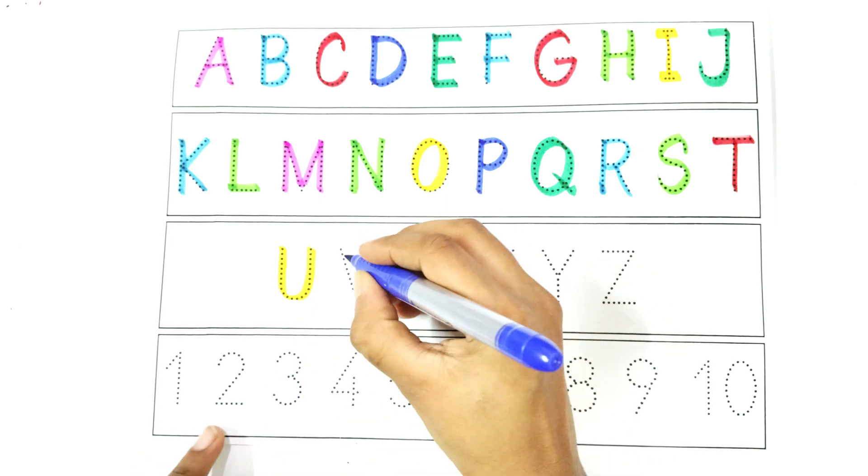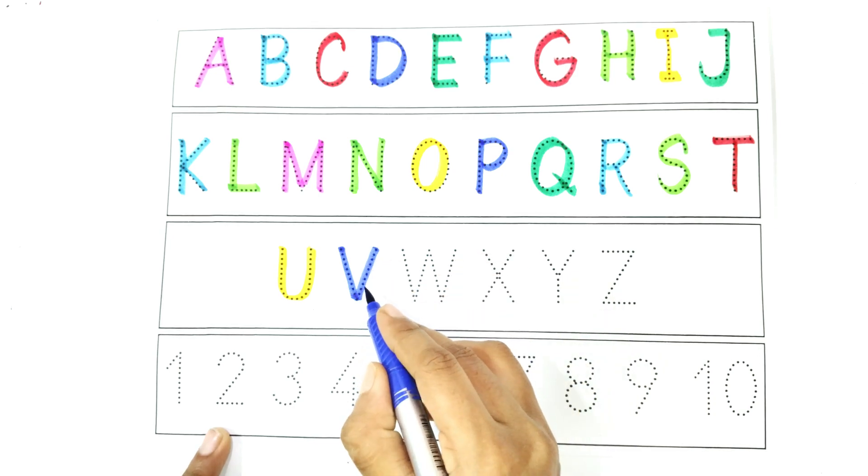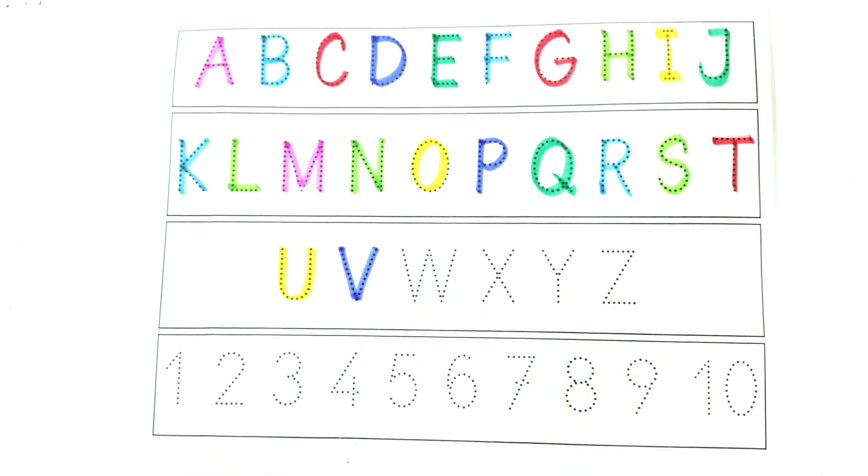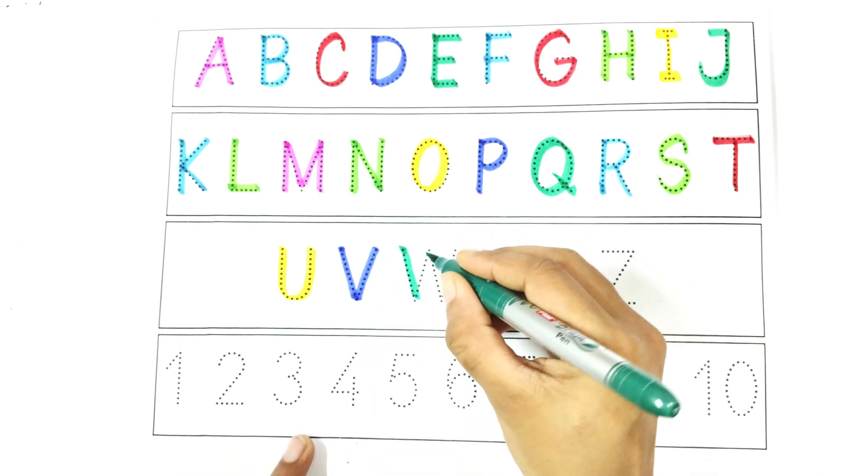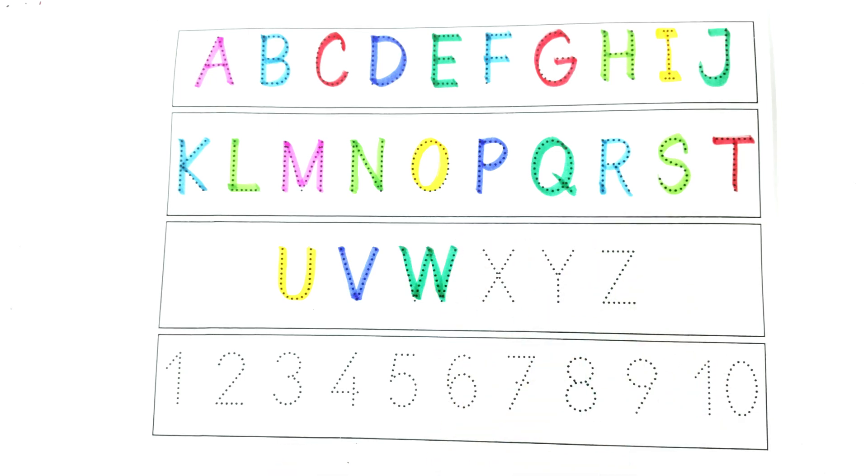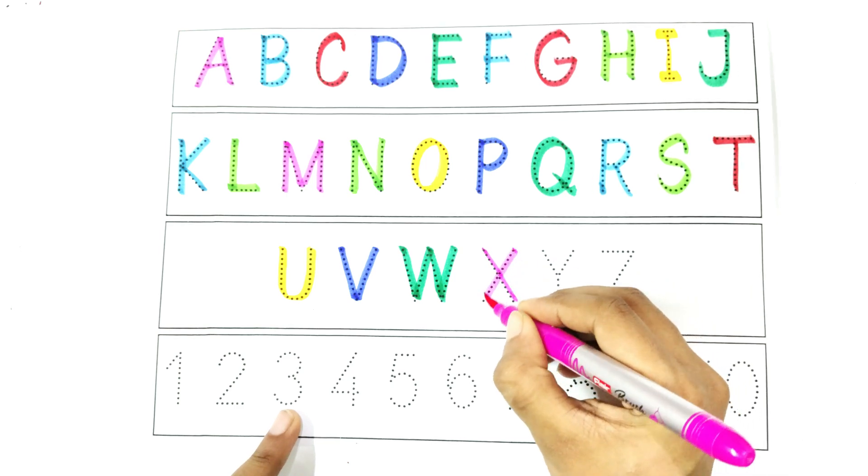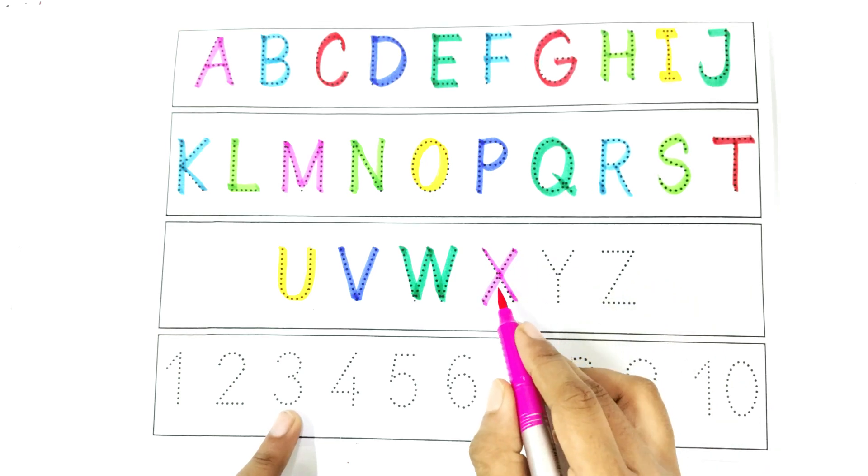Write with me: V. V is for van. Write with me: W. W is for watermelon. Write with me: X. X is for xylophone.